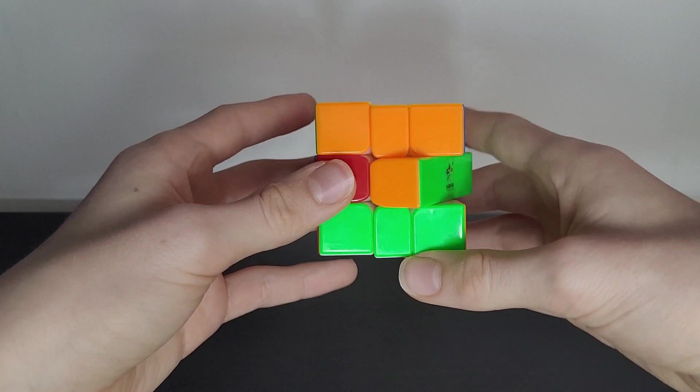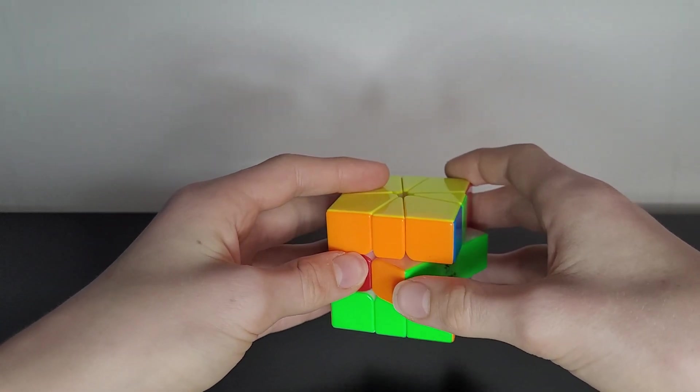Now if you go on to solve the square one how you would usually solve it, you will not get parity.